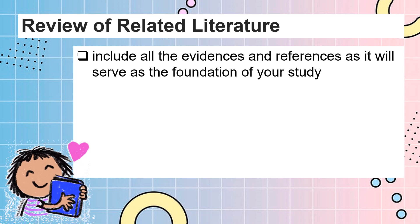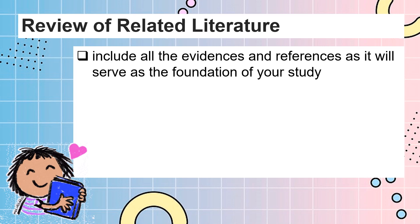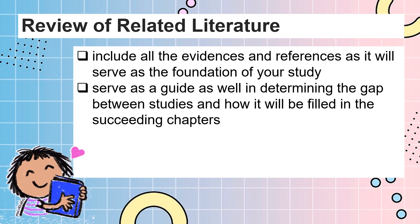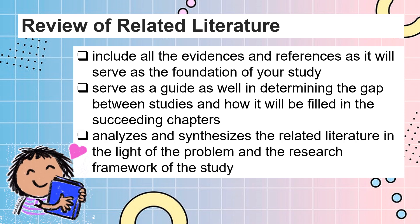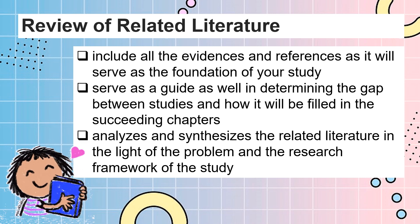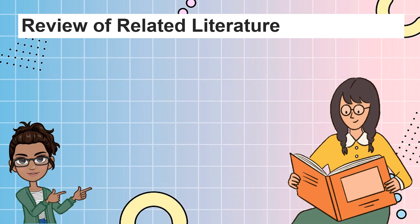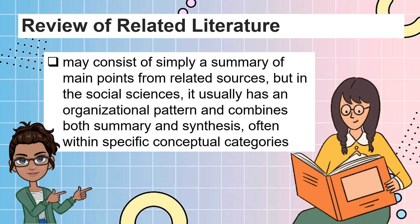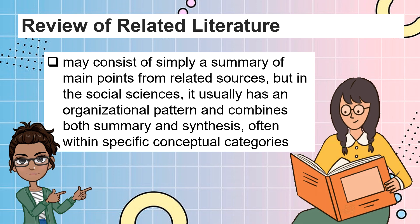Readers will understand your reasons in conducting the research if you provide substantial information. This review will serve as a guide in determining the gap between studies and how it will be filled in the succeeding chapters. This section of the paper analyzes and synthesizes the related literature in the light of the problem and the research framework of the study. It further points out results which are proven and accepted as facts. As stated by USC Libraries in 2019, a literature review may consist of simply a summary of main points from related sources, but in the social sciences it usually has an organizational pattern and combines both summary and synthesis, often within specific conceptual categories.